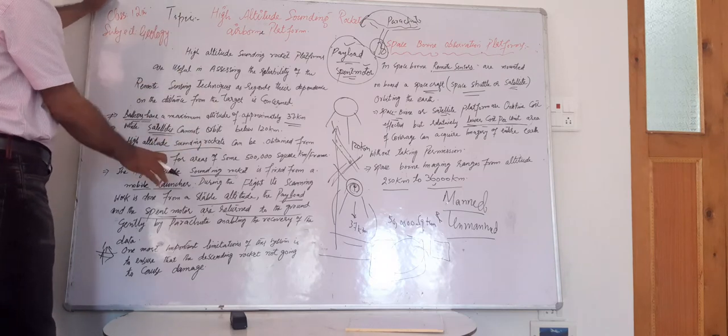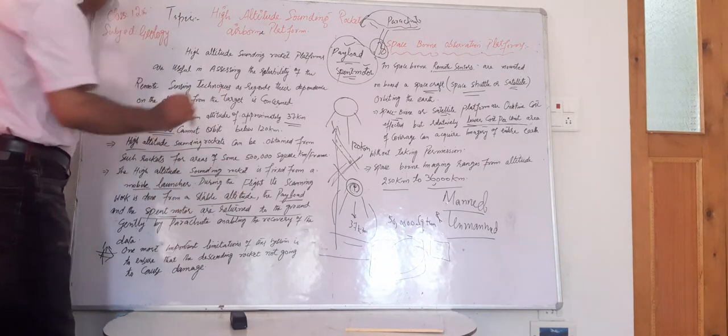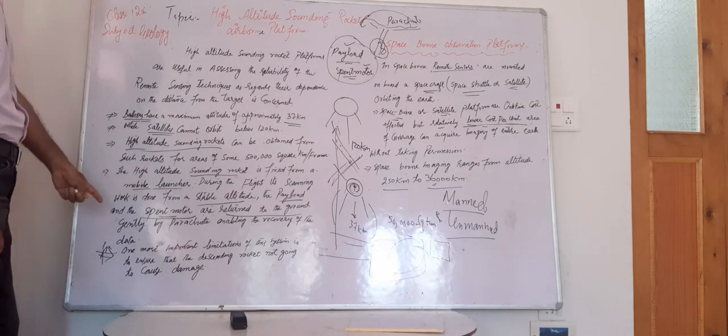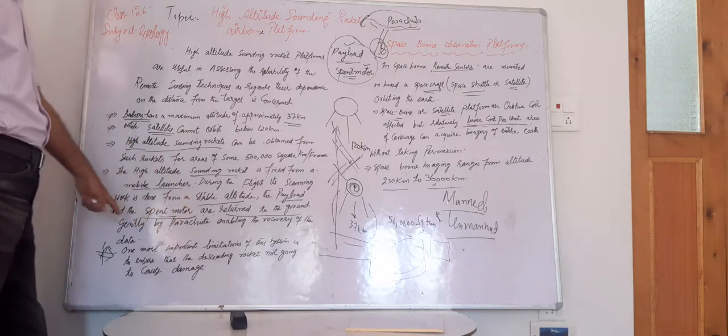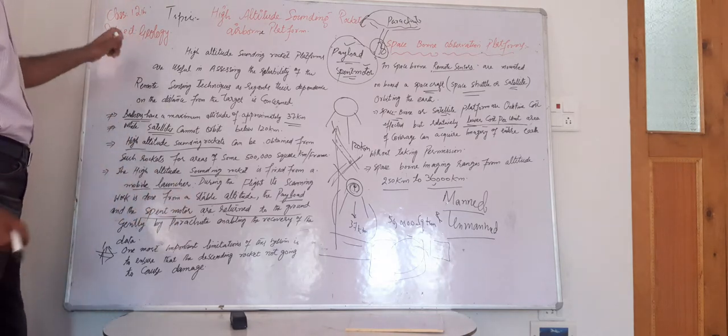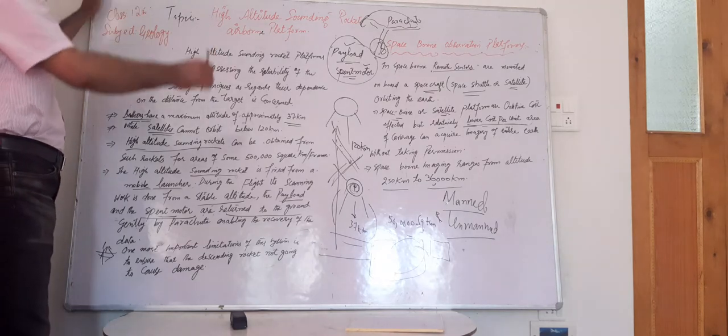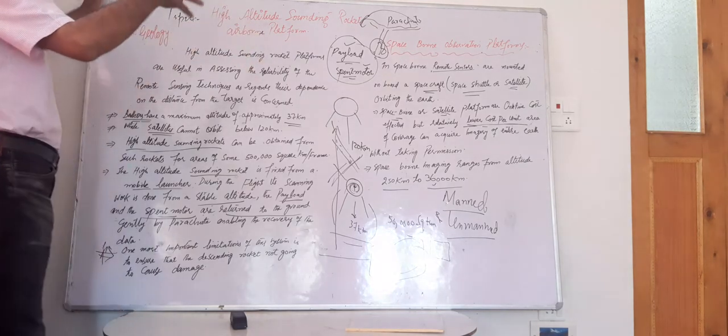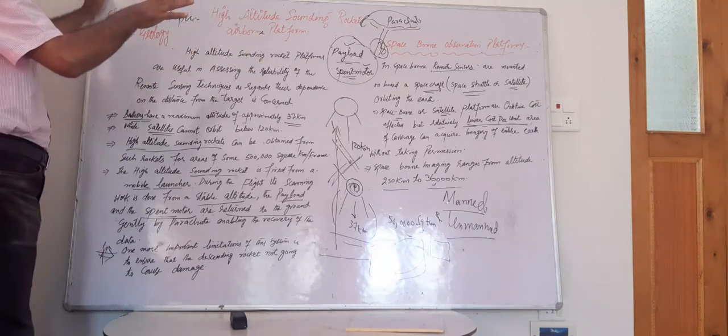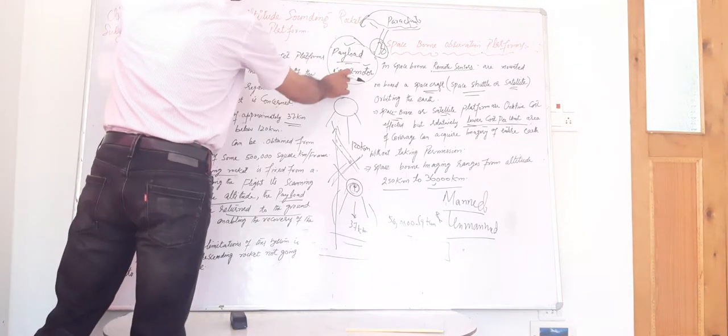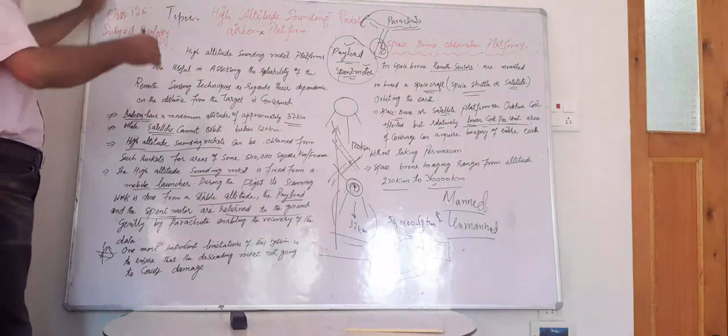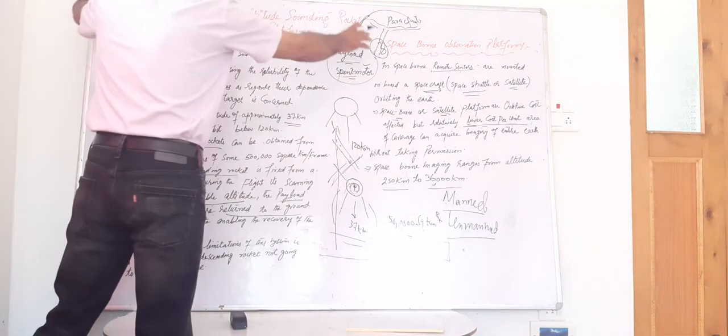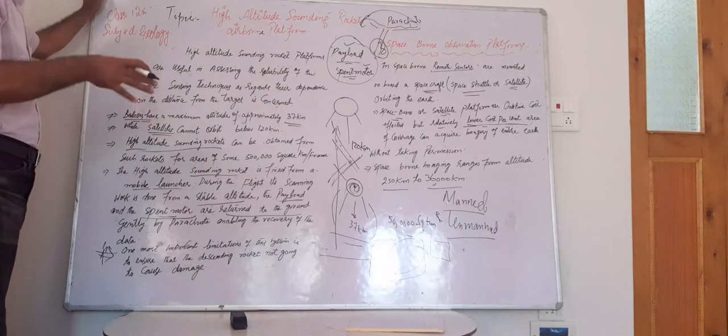One of the main limitations of this airborne platform sounding rocket system is to ensure that the descending rocket is not going to cause damage. Sometimes damage can occur, but the main thing is that the payload and spin motor are returned to the ground gently with the help of a parachute so that we can recover the data easily.